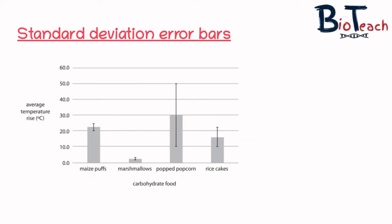For example, these error bars are vertical and they're showing you the variance between the average temperature rise in all of those carbohydrate foods. This is taken directly from an exam — it's exactly what you'd be expected to do in the exam should a question like this come up. You might also be thinking: what's the point in error bars? Why should I include them at all?